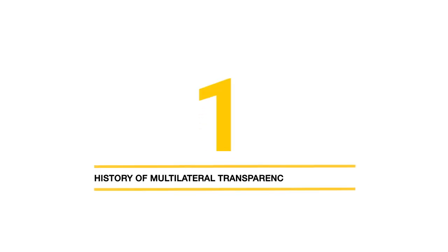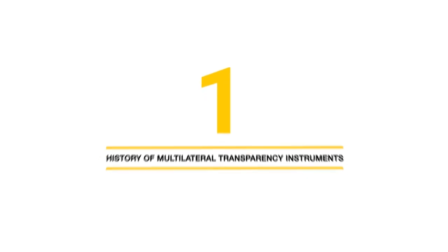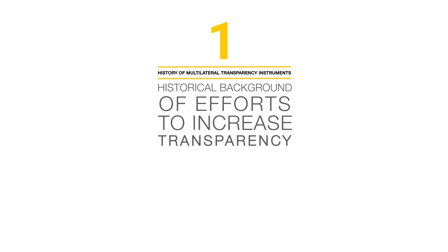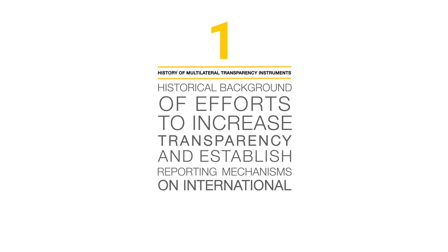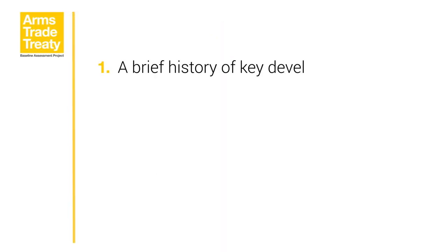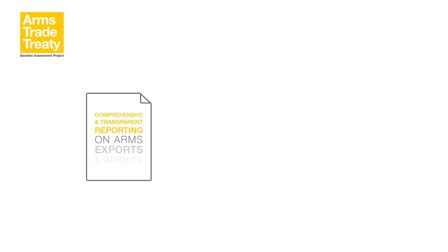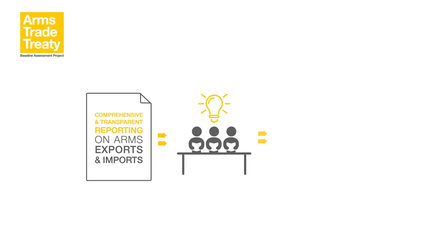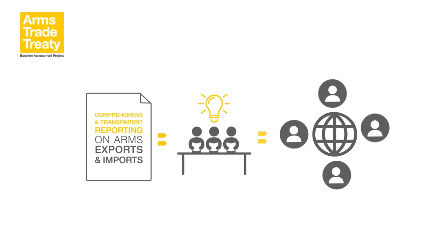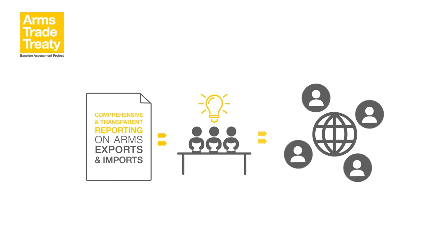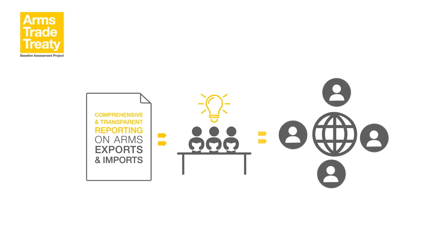Module 1: History of Multilateral Transparency Instruments. Module 1 provides an historical background of efforts to increase transparency in the international arms trade and establish reporting mechanisms on international arms transfers. This module will offer descriptions of existing agreements and regimes that are synergistic with the Arms Trade Treaty. The module will provide a brief history of key developments in global efforts towards transparency in the international arms trade, an overview of multilateral transparency instruments, and insight on relevant reporting instruments. Comprehensive and transparent reporting on arms exports and imports helps mitigate the risks of secret arms transfers. Such information generates awareness of global arms flows, which in turn creates an environment of responsibility and accountability for arms transfer decisions. Such openness serves as a confidence-building measure and encourages international cooperation.